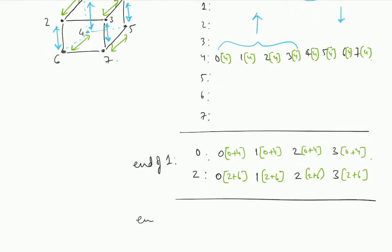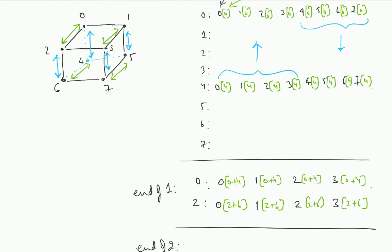Now let us go to the next iteration. I am going to communicate these elements between 0 and 2. Which elements will 0 send to 2 and which elements will 2 send to 0? Just take a perpendicular to the link joining 0 and 2. We are only interested in elements 0, 1, 2, and 3. Between 0 and 2: 0 will send elements 2 and 3 to node 2, and node 2 will send elements 0 and 1 to node 0.